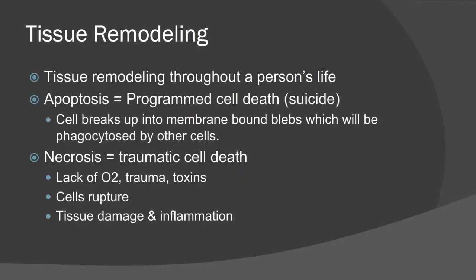Throughout an individual's lifespan, tissues undergo remodeling through stages of cell death and growth — for example, during menstruation, where the endometrial layer grows, then sloughs off and is expelled. Programmed cell death is called apoptosis — essentially cell suicide — where cells are broken down and phagocytosed by other cells. Don't confuse this with necrosis, which is traumatic and often unintentional cell death caused by toxins, lack of oxygen, or physical trauma, causing cells to rupture and triggering an inflammatory response.